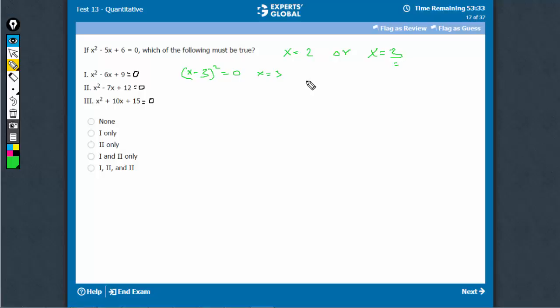So when x is equal to 3, we get yes, we get true as an answer. When x is equal to 2, we get no, false as an answer. Yes and no, both are possible. The question asks you must be, so statement 1 doesn't qualify.